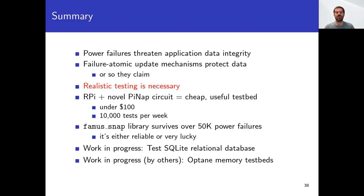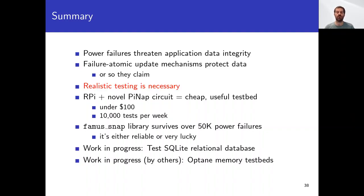To wrap up: power failures pose the most serious danger to application data integrity. Failure-atomic update mechanisms protect data in theory, but they have disappointed us often in practice. Therefore, there is no substitute for thorough, realistic testing against sudden whole-system power interruptions. Our PiNAP power interruption circuit combined with a single-board computer like the Raspberry Pi makes a versatile, powerful testbed that is cheap, rugged, and capable of performing 10,000 power-off test cycles per week. FAMS-SNAP passed over 50,000 power failure tests, suggesting it is not completely broken. We are currently implementing transactional workloads for testing SQLite, and we look forward to results from groups planning realistic power failure tests involving Optane non-volatile memory.